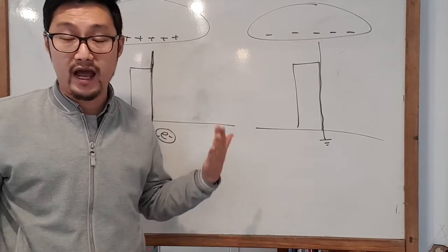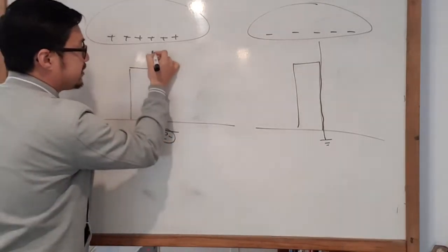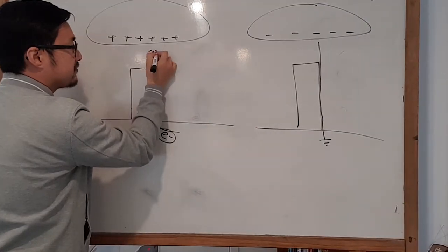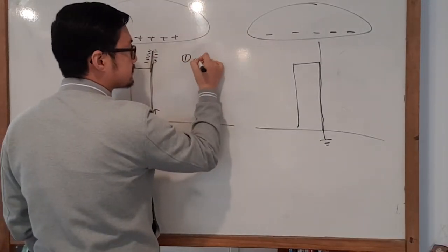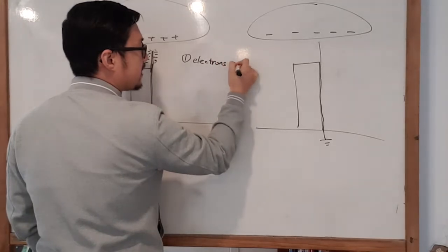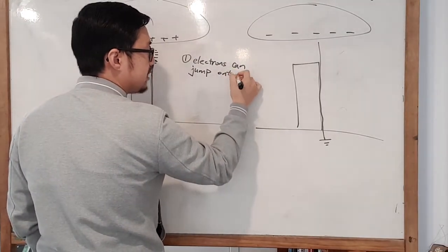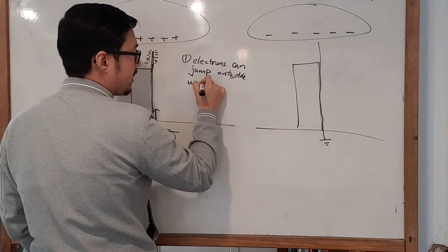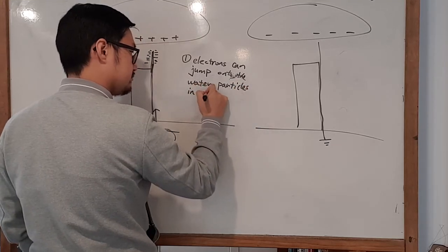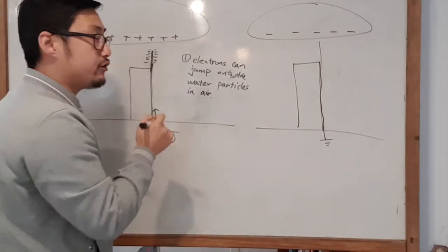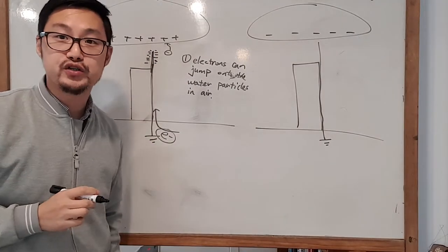The earth is a reservoir for electrical charge — lots of electrons, always neutral. With a positive cloud, it attracts electrons upward through the rod, and a large negative charge accumulates at the tip. At that point, electrons can jump onto water particles in the air.